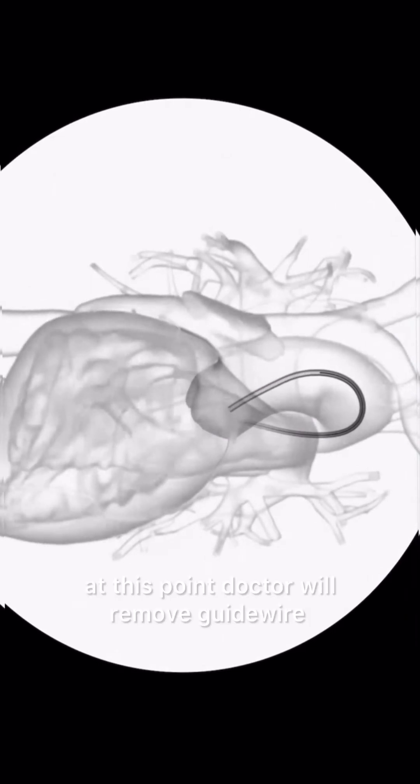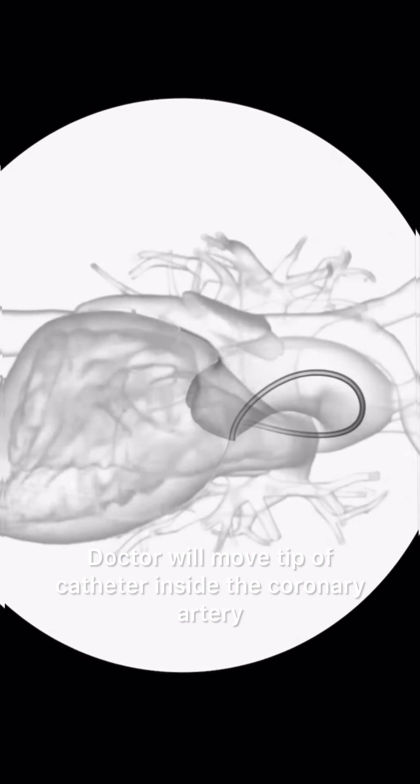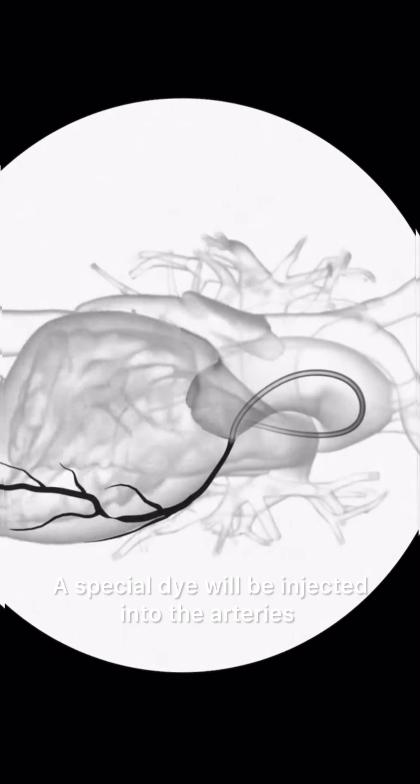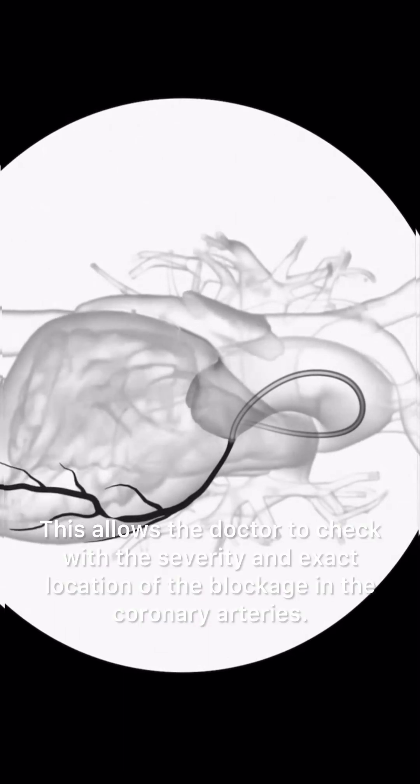At this point, the doctor will remove the guide wire and move the tip of the catheter inside the coronary artery. A special dye will be injected into the arteries. This allows the doctor to check the severity and exact location of the blockage in the coronary arteries.